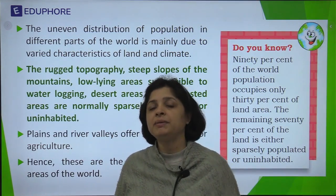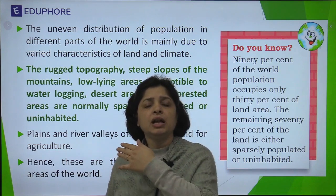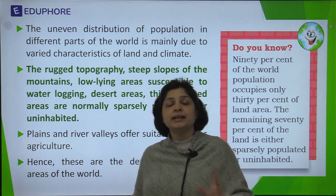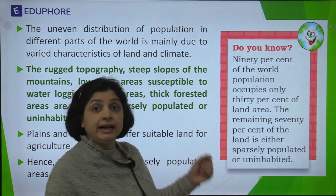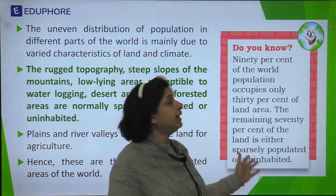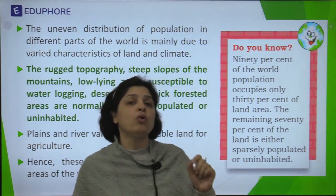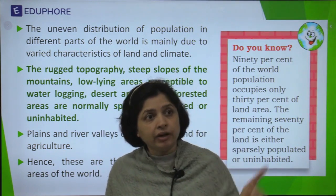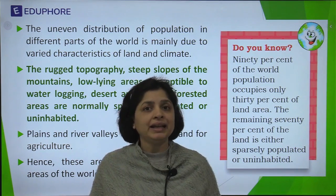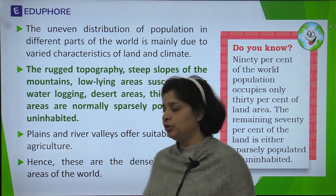On the other hand, coastal areas and plains provide the best conditions where agriculture, industries, cities, transportation, and other economic activities can be very nicely pursued. That is why plains and river valleys or deltaic areas are among the most populated areas of the world. In fact, 90% of the world's population lives on only 30% of the land area, while the remaining 70% of land is home to only 10% of the population.